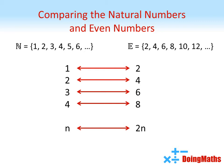Each number in N is matched to exactly one number in E and vice versa. Therefore, the natural numbers and the even numbers are the same size. With a slight tweak, we can also create a bijection between the natural numbers and the odd numbers, meaning that these are also the same size as each other.